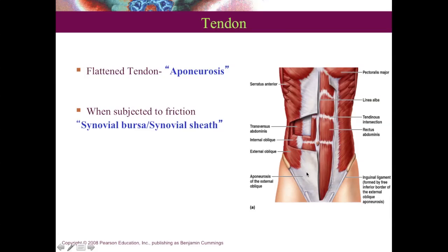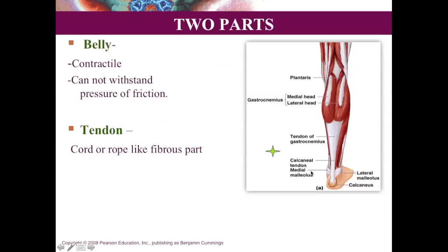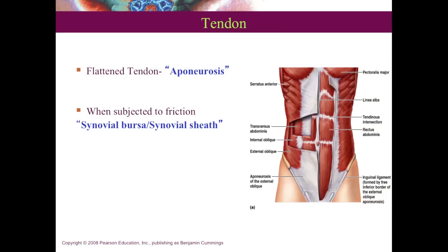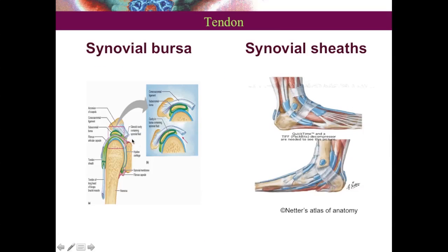When a tendon crosses a joint, movement creates friction. To prevent this, at the site where the tendon contacts bone there is a synovial bursa and a synovial sheath. The word 'bursa' derives from the same root as the English word 'purse,' meaning a pouch. A synovial bursa is a small synovial pouch, and when a tendon crosses a joint there may also be an elongated tubular synovial sheath. Both structures prevent friction at the tendon.